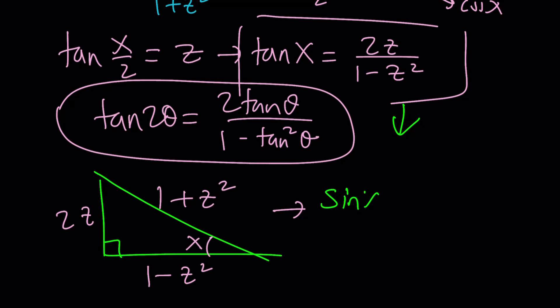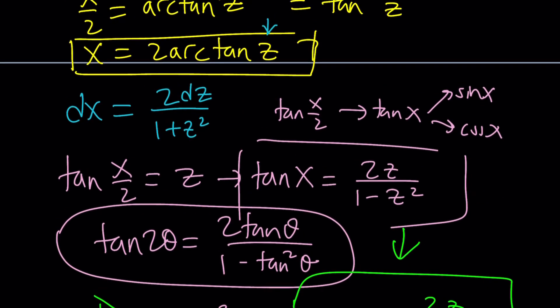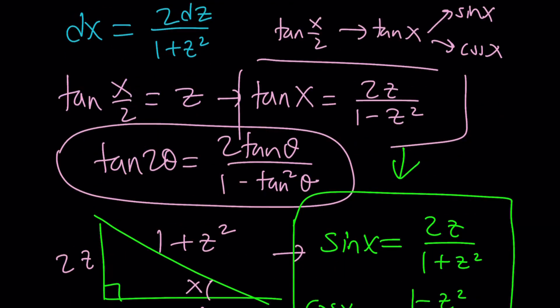Let's go ahead and find sine and cosine from here. Sine x is just going to be opposite over hypotenuse, which is 2z over 1 plus z squared. And cosine x is going to be the adjacent, 1 minus z squared, divided by 1 plus z squared. Great. So, we got sine and cosine, and then we have the dx and pretty much everything we need.